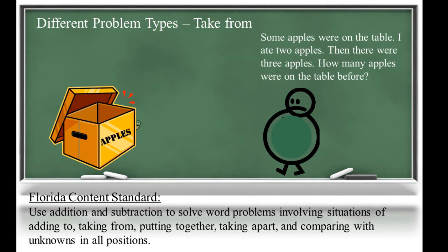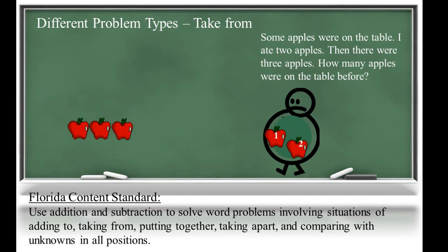In the last problem, some apples were on the table. I ate two apples. Then there were three apples. How many apples were on the table before? Here the amount we start with is unknown, but we know the change and how many apples we have at the end. In this problem, students should be thinking some number, take away two, is the same as three.